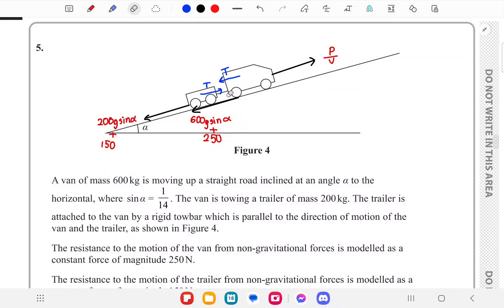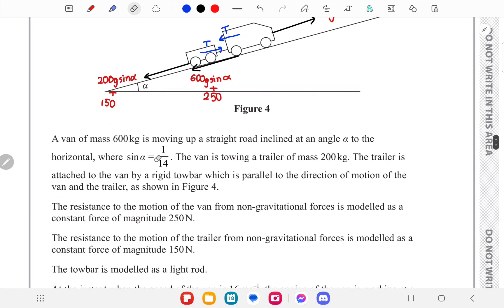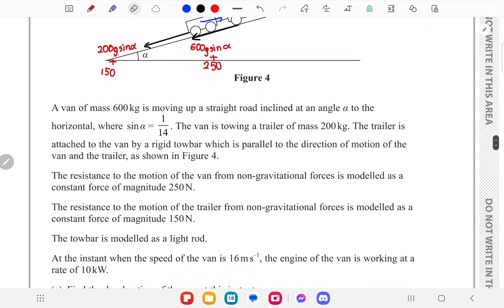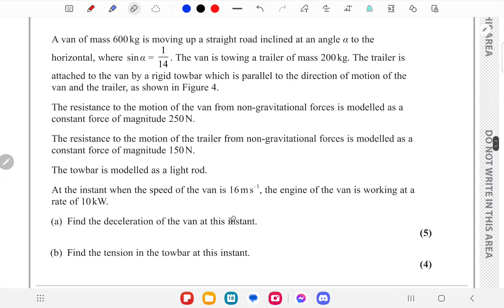We are given a van moving up a ramp with a trailer attached to it. We are given the value of sine alpha, the mass of the trailer, the mass of the van, and the resistance to motion for each: 250 newtons for the van, 150 newtons for the trailer. We have to find the deceleration of the van when it's moving at 16 meters per second and the engine is working at a power of 10 kilowatts.